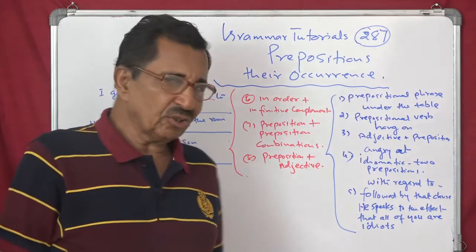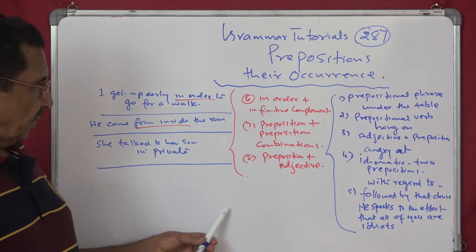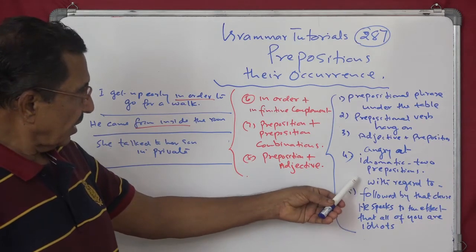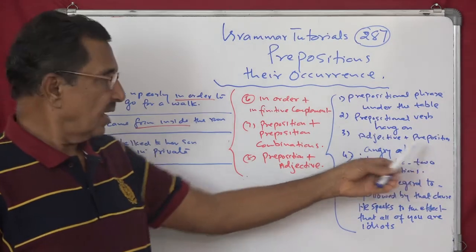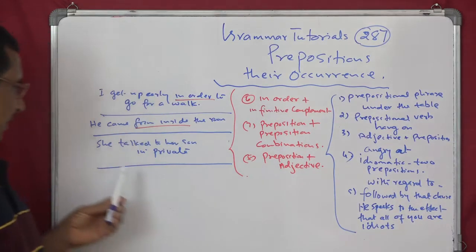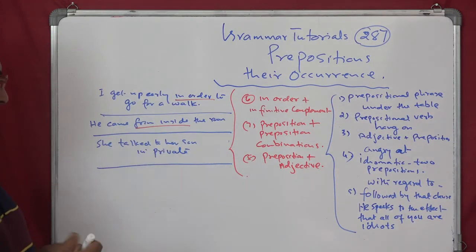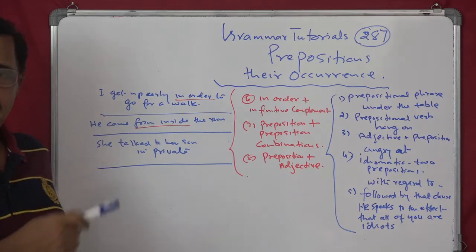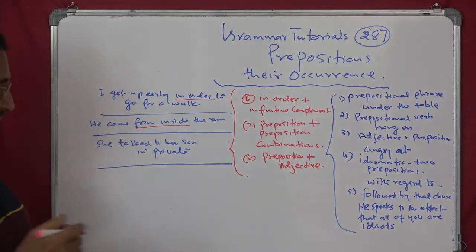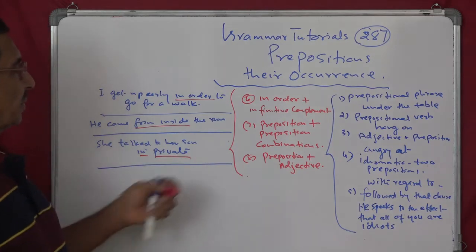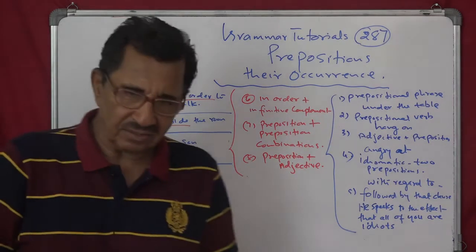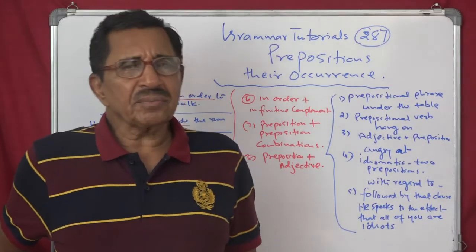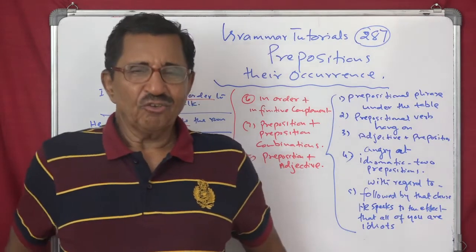So two prepositions. And now, next one what we see is preposition with adjective. Plus adjective. Here you have got adjective plus prepositions. What have you here? Prepositions and adjective. You'll see. She will talk to her son in private. In this, preposition and then private is adjective. So in private. Preposition with adjective. Preposition plus adjective.